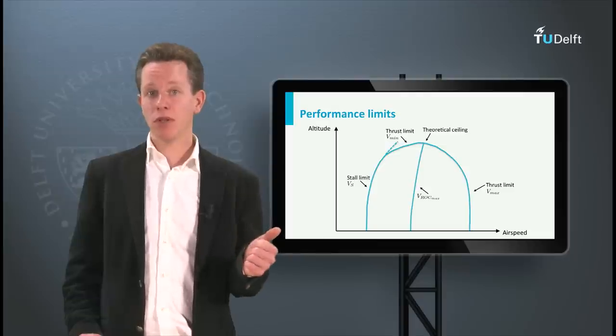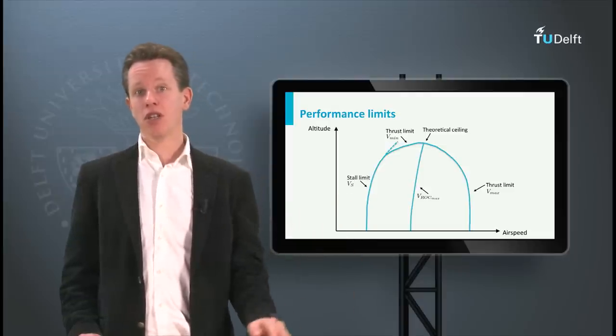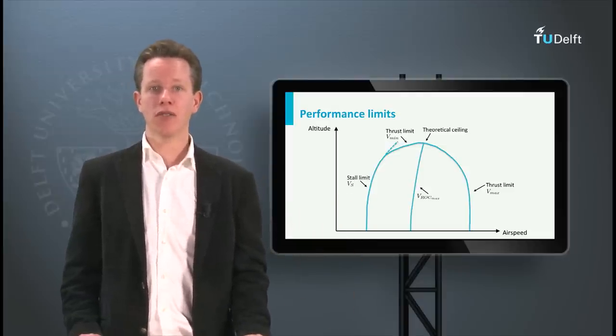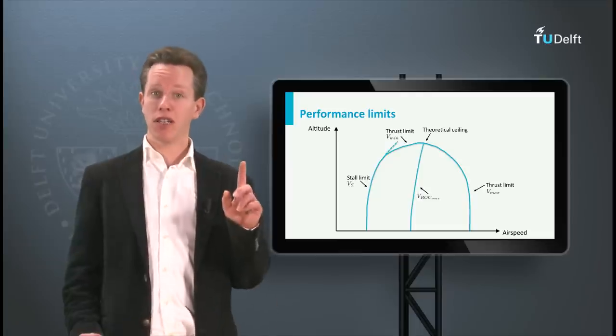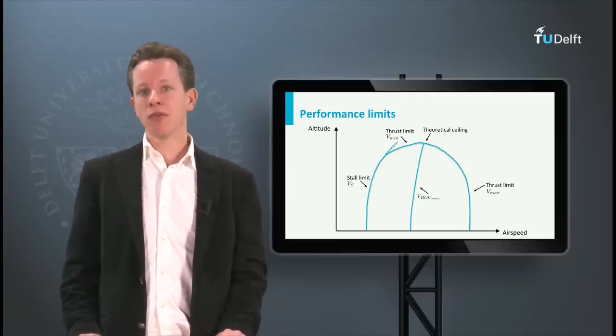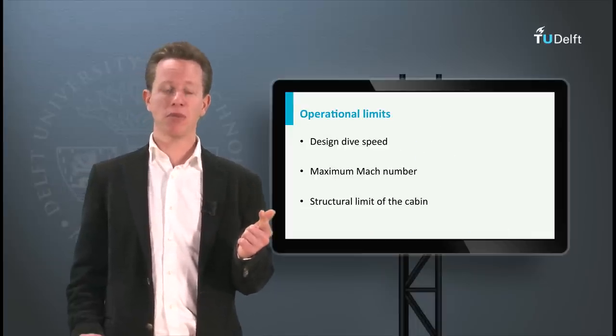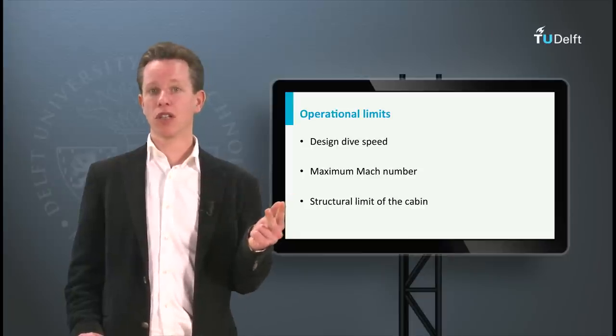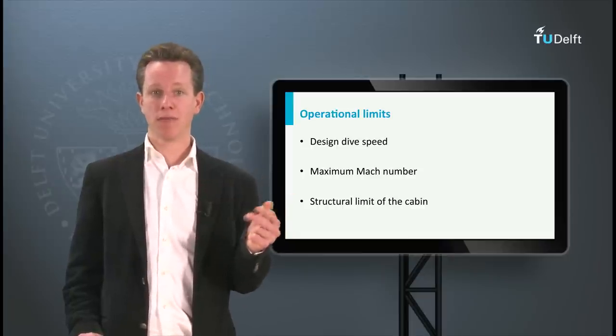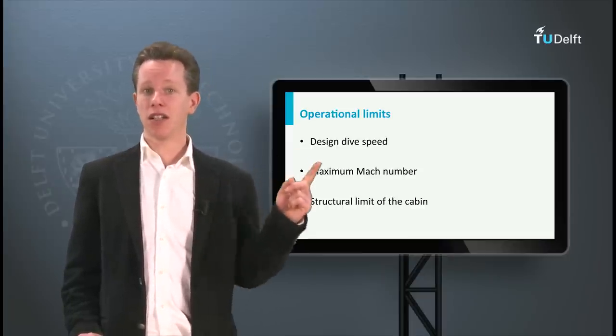If these are combined with the performance limits, then we know in what conditions the aircraft can fly but is also allowed to fly. There are three operational limits I would like to address: first is the design diving speed, second the maximum Mach number, and third the structural limit of a pressurized cabin. Let's start with the design diving speed.